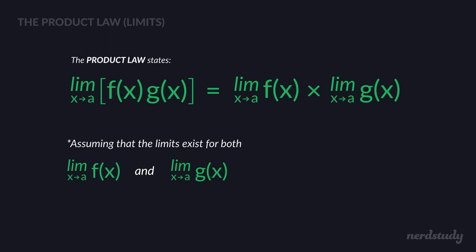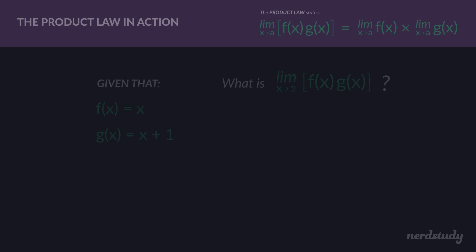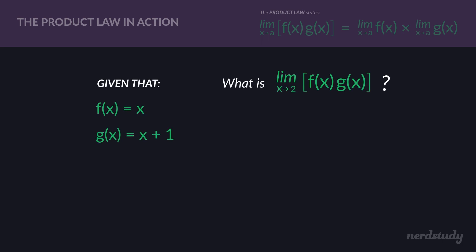With that being said, let's try a question together to get used to using the product law when finding a limit. In this question, we have f of x equal to x — a pretty simple function — and g of x equal to x plus one. Then what is the limit as x approaches 2 for f of x times g of x?